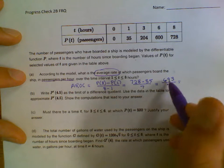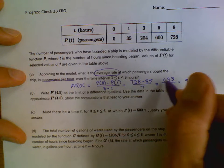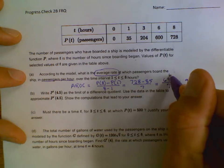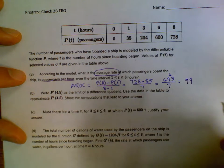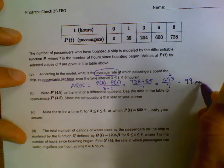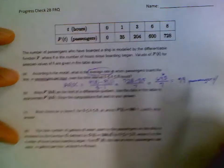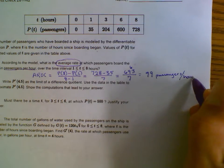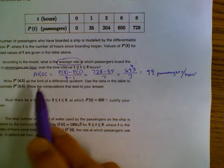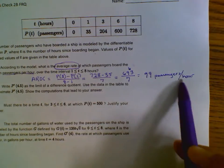And then 693 divided by 7. 7 goes into that almost 10 times, so we're going to say 9 times. 9 times 7 is 63 with 6 remaining, and then 7 goes into 63 nine times. So we're getting 99 passengers. You want to make sure that you always keep up with the units. Passengers per hour. So the average rate of change from hour 1 to 8 is 99 passengers per hour.